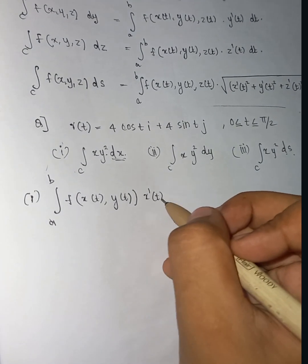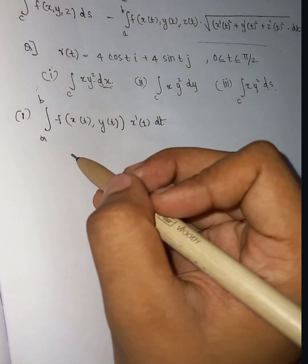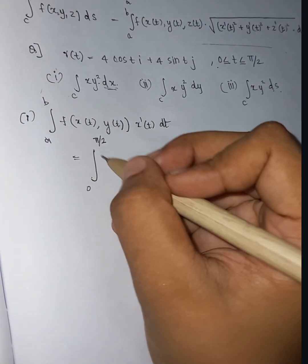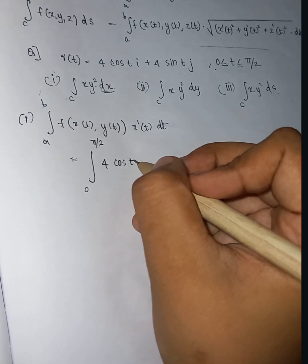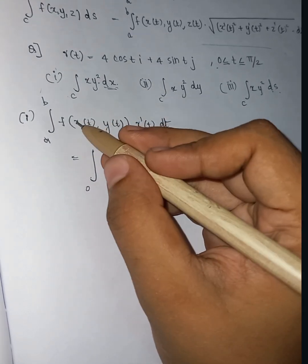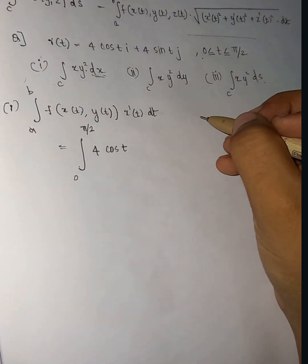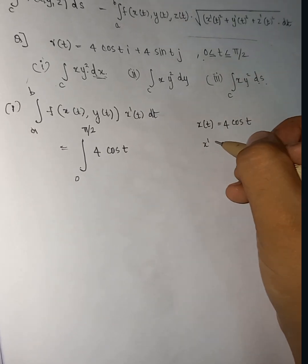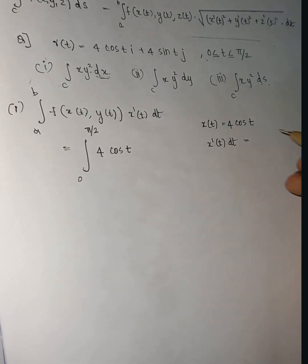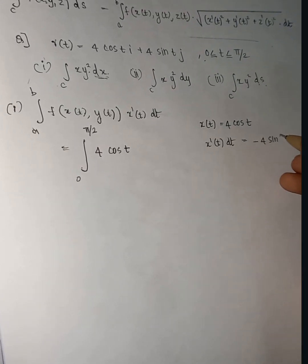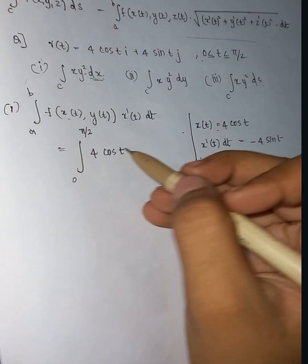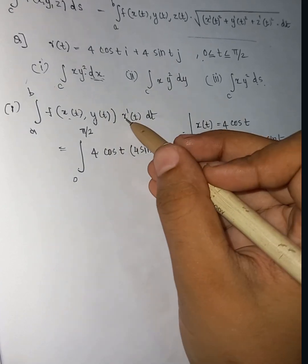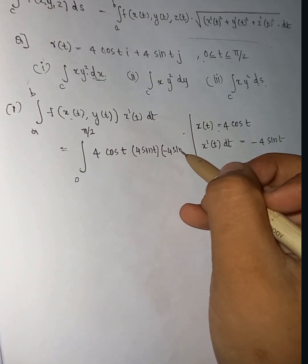For the first integral, using x'(t) dt, we write: integral from 0 to π/2 of f(x(t), y(t)) times x'(t) dt. Here x(t) = 4cos(t), y(t) = 4sin(t), and x'(t) = -4sin(t). So we substitute: f(x(t), y(t)) = 4cos(t) · (4sin(t))², times x'(t) = -4sin(t) dt.